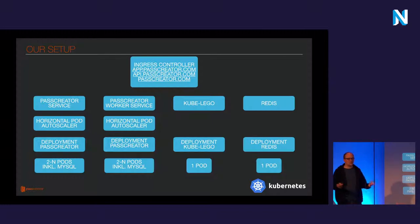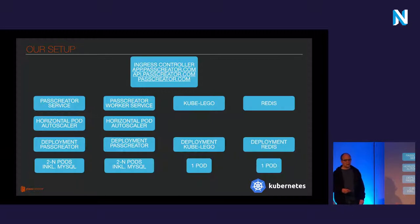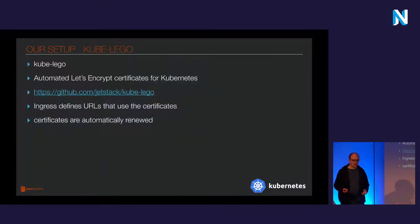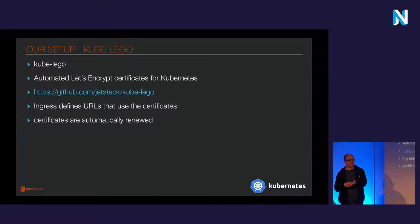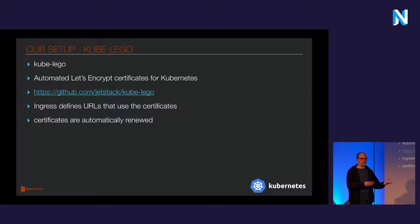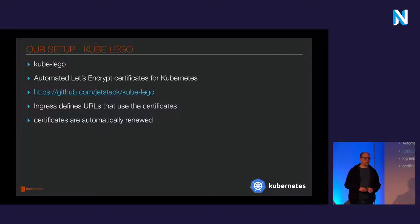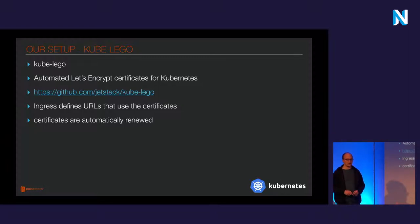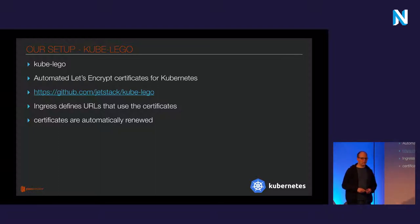KubeLego looks at the ingress definition and creates certificates automatically. It's automated Let's Encrypt certificates — you define any domain and tell KubeLego to create a Let's Encrypt certificate for it. If it doesn't find a certificate, it automatically creates one and also takes care of renewal. Let's Encrypt certificates are only valid for 90 days, so it's not handy to renew them by hand, and that's exactly what this service does. The certificate itself is stored inside a secret, which is a way to store sensitive information inside Kubernetes.